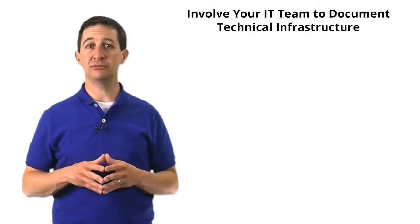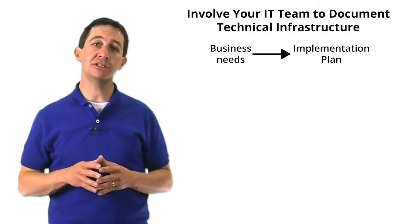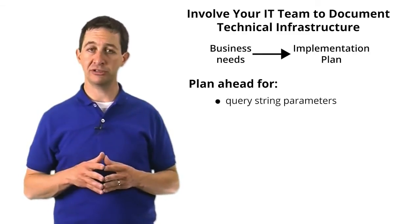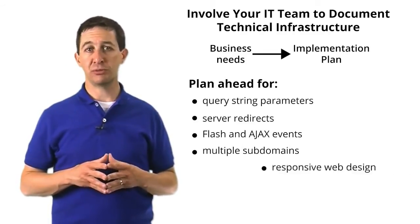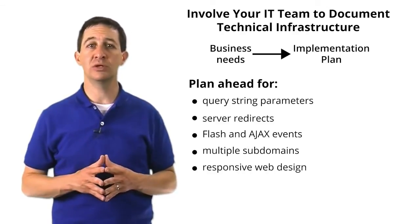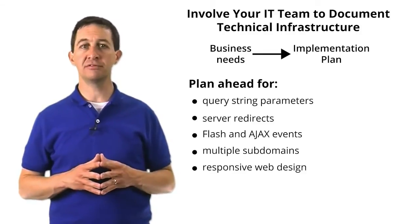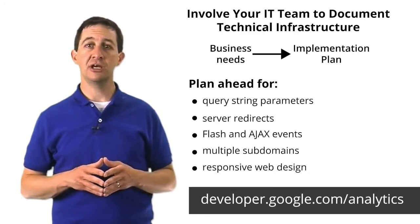Once your business measurement plan is complete, you will have documented what you want to measure. But can you measure everything in your plan? It depends on the website, mobile app, or other device you're trying to measure. You need the help of your IT team to translate the business needs to an implementation plan. The IT team can help you understand the website or app environment and ultimately determine what you can track. There are a few website technologies that will require additional planning: query string parameters, server redirects, Flash and Ajax events, multiple domains and subdomains, and responsive web design. All of these scenarios require extra attention when designing your implementation plan for tools like Google Analytics. It is absolutely critical to have a thorough conversation with your IT team to understand the environment you want to measure.